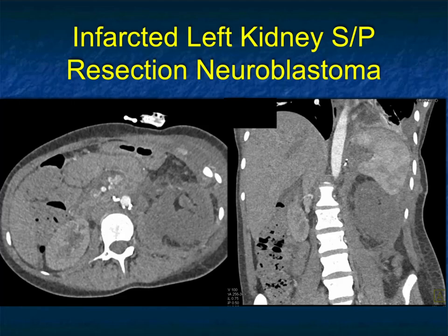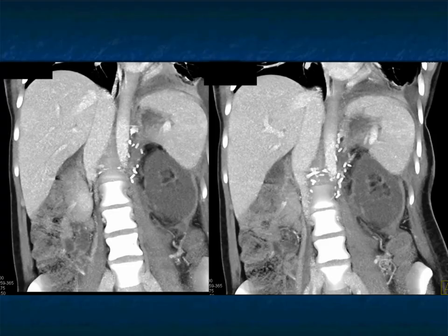That was one of the more unusual cases — bilateral global infarctions are not common. In this case, a patient who had a resection of a neuroblastoma developed flank pain post-op. The right kidney has good cortical medullary interface, but the left kidney shows lack of enhancement — global infarction. In the venous phase it stands out better, with a little capsular flow to the edge. The renal artery was injured at the time of adrenalectomy — a known complication — and this kidney will be removed because flow will not return. This is nicely accentuated on cinematic rendering.